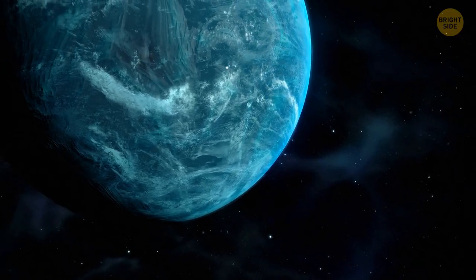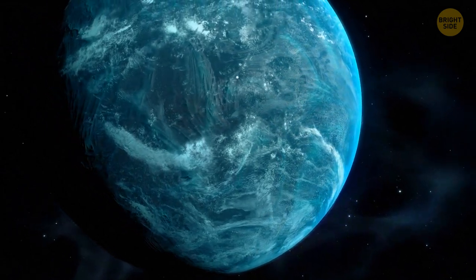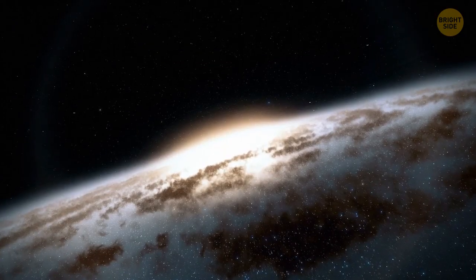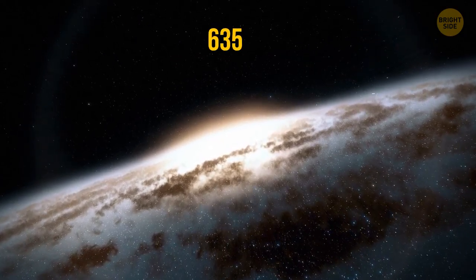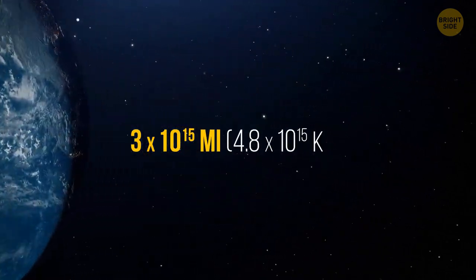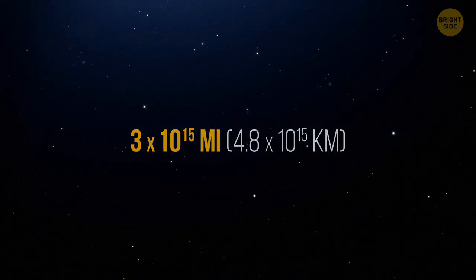Now, we know that Kepler-22b is very similar to our planet and could potentially become a second Earth. It's also very close to us, only 635 light-years away. Yeah, it's about 3 quadrillion miles. But this is one of the closest options.